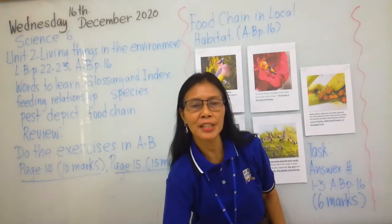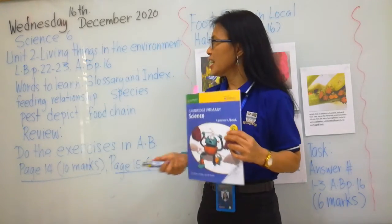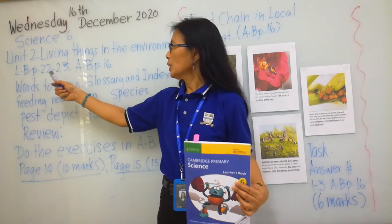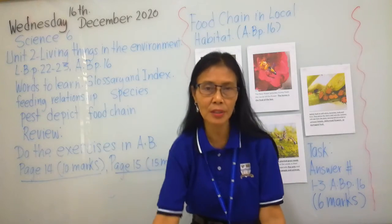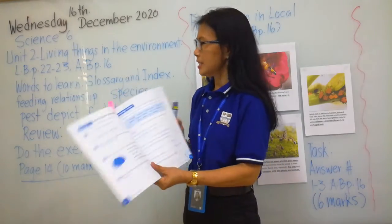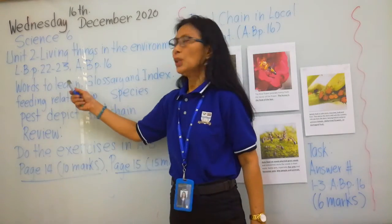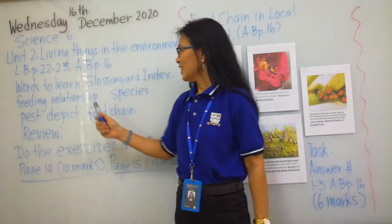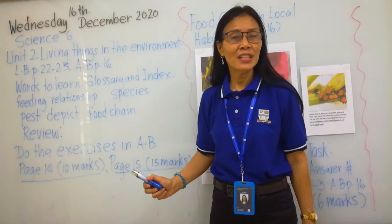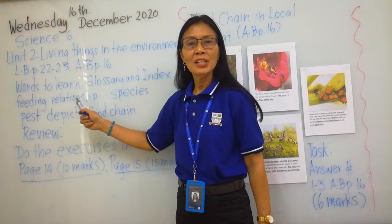That is in your learner's book pages 22 to 23 and activity book page 16. And we have here words to learn. Use your glossary and index to give the definition of the words: feeding relationship, species, pests, depends, and food chain.